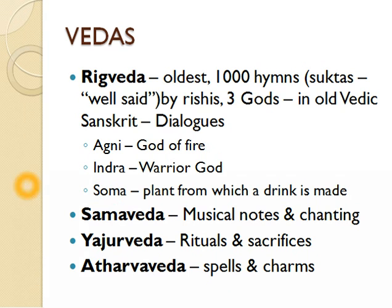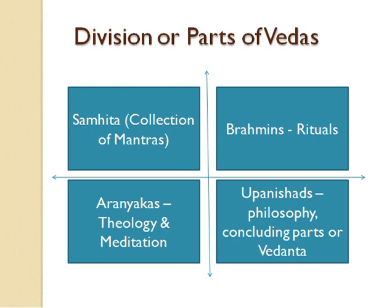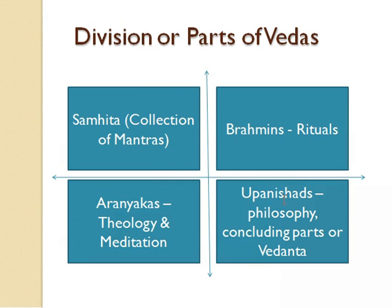The Vedas are divided into different parts: Samhita, Brahmanas, Aranyakas, and Upanishads. The Samhitas are collections of mantras. The Brahmanas deal with rituals. Aranyaka — the word itself indicates 'aranya,' meaning forest or jungle — gives ideas about theology and meditation.